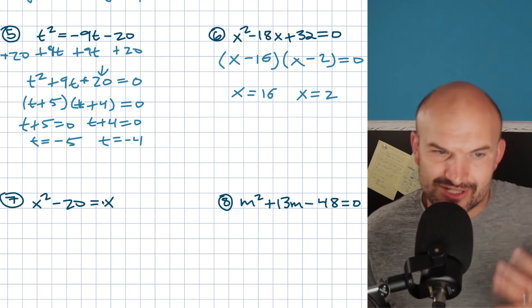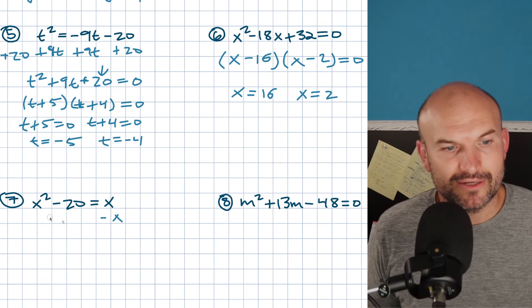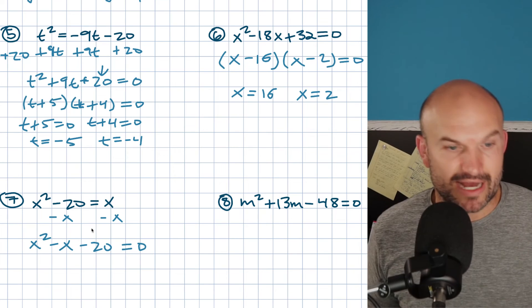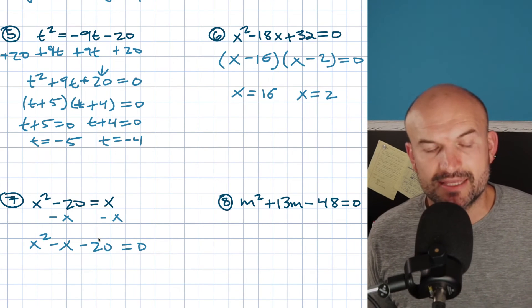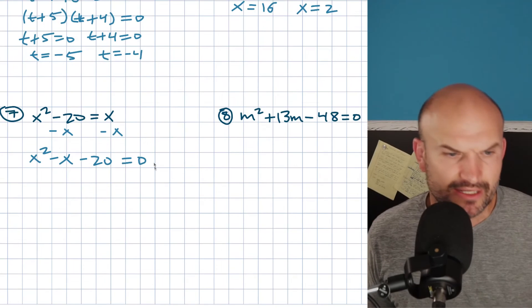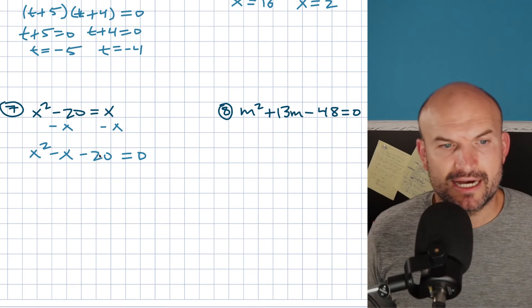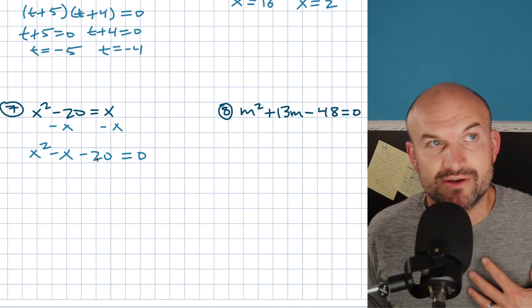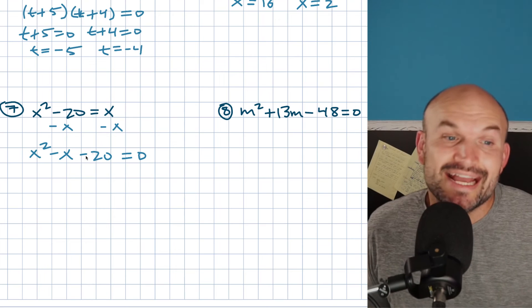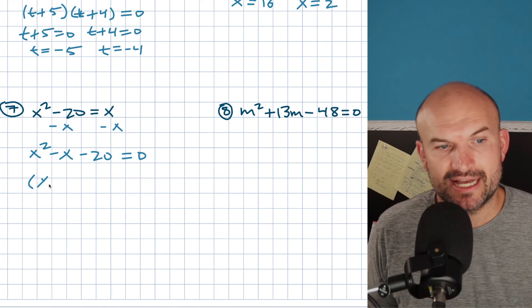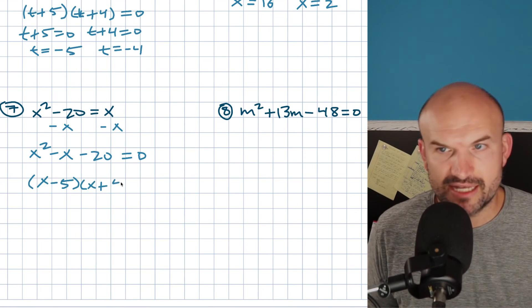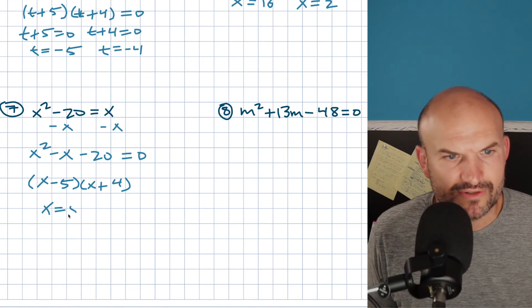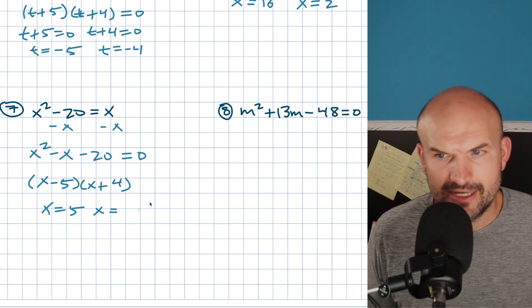In this case, just be careful — get that x over to the same side. So x squared minus x minus 20 equals zero. I'm looking for factors with a difference of negative 1 — one factor is positive, one is negative. Thinking of 20, I have 5 and 4. I want negative 5 and positive 4 to give me that negative 1. So that factors into (x minus 5)(x plus 4) equals zero, giving x equals 5 and x equals negative 4.